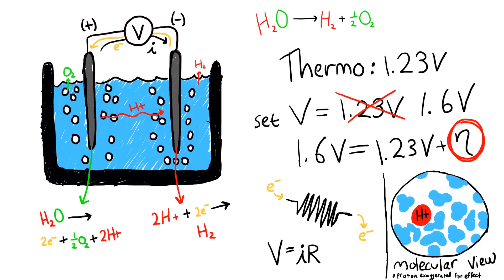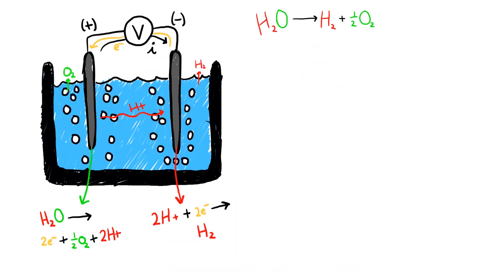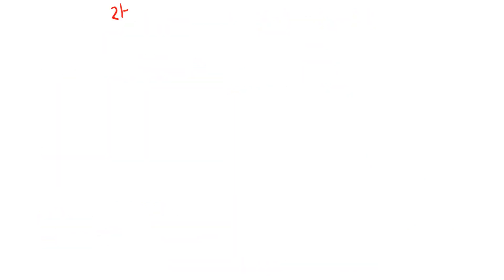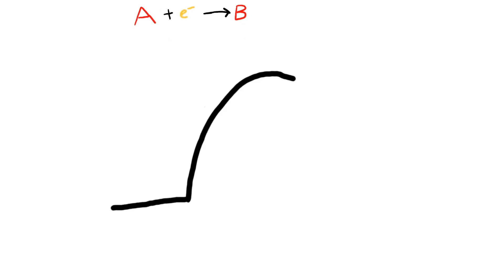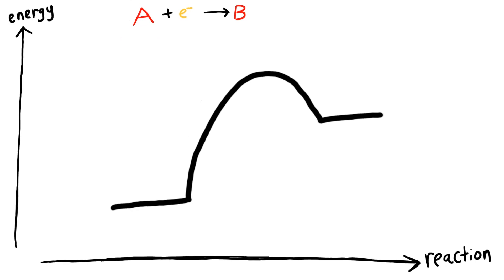Now we'll explore kinetic overpotential in context of getting out of bed. Since the kinetics of water splitting are quite complex, we will look at the simpler reaction of A to B, which has a reaction diagram something like this. The conclusions that we draw can still be applied to the electrolyzer.